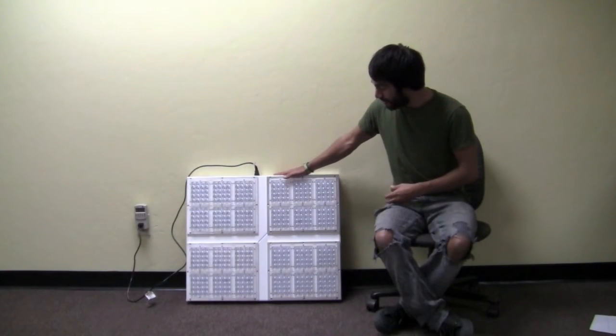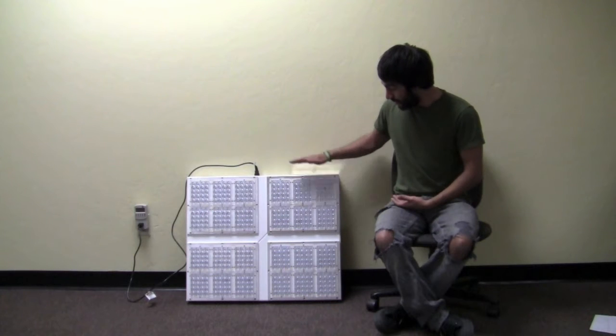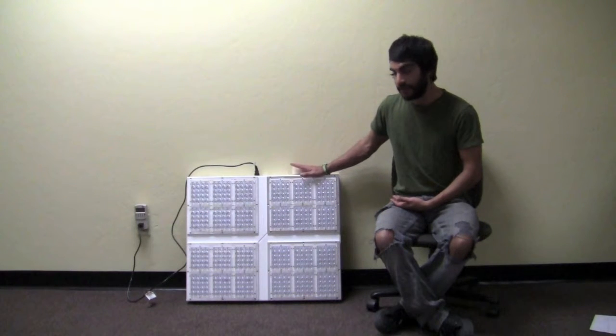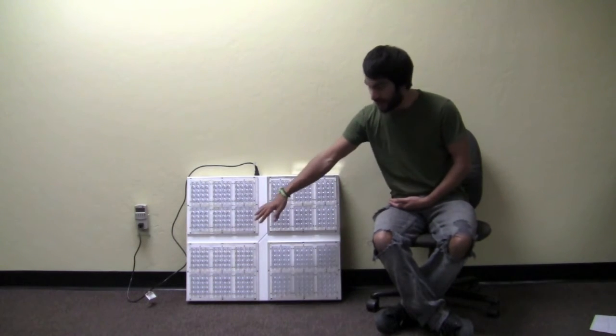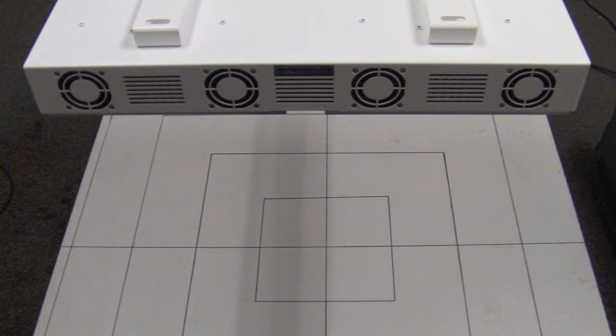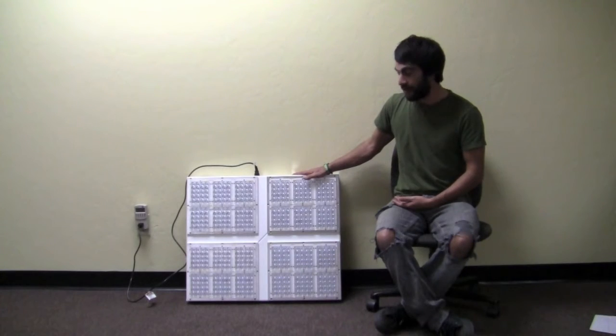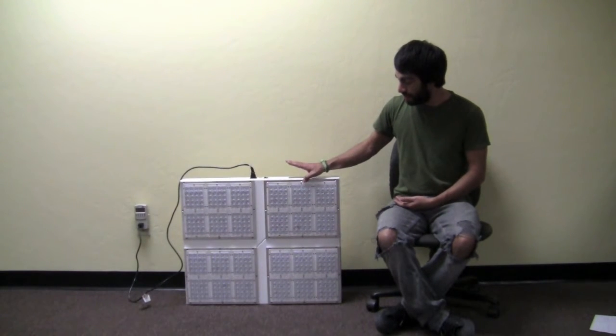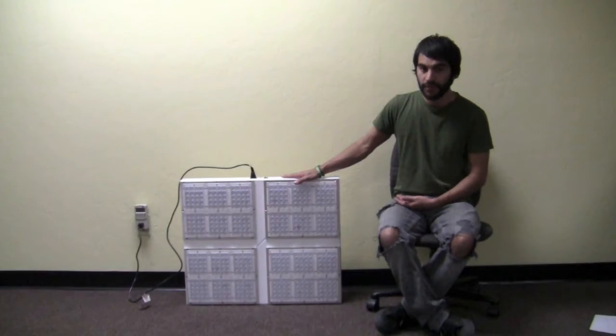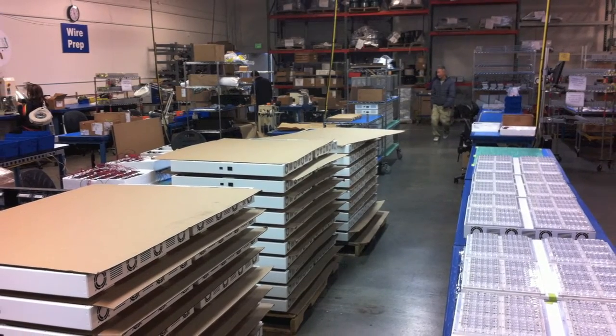This is a pretty big light as you can see and compare relative to myself. It weighs probably close to 60 pounds and has 4 built-in fans on each side for 8 fans total to make sure it cools the LED, and they say it will keep the LED at about 90 degrees Fahrenheit which is a very cool temperature for this light. This light is completely made in the USA, assembled here in California at Apache Tech's warehouse.